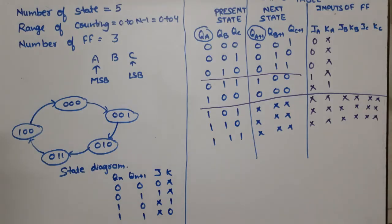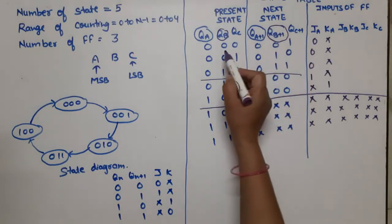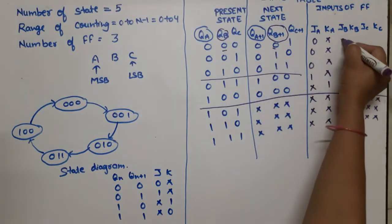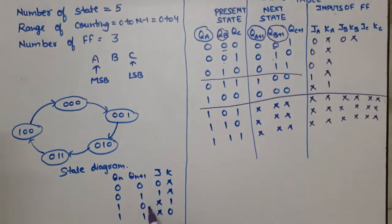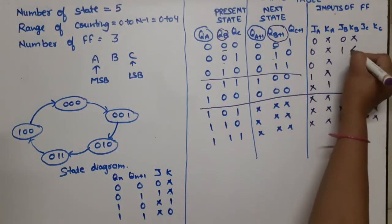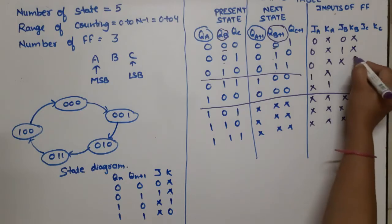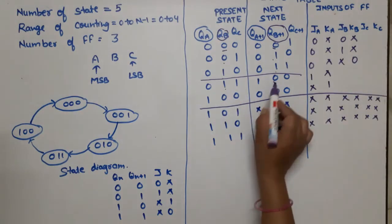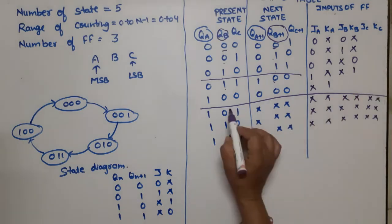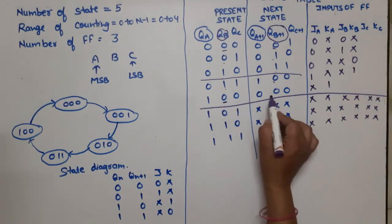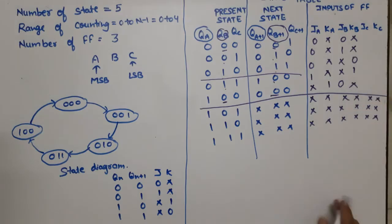For JB and KB, we look at QB and QB+1. The first case is 0→0, giving JB=0, KB=X. Next is 0→1, giving JB=1, KB=X. Then 1→1, giving JB=X, KB=0. Then 1→0, giving JB=X, KB=1. The last case (state 4) has QB going 0→0, giving JB=0, KB=X. Don't care states get X values.